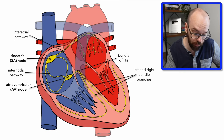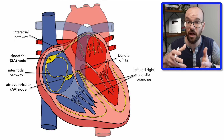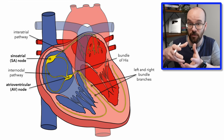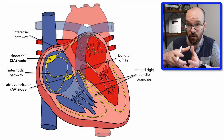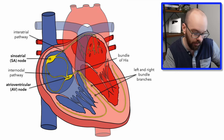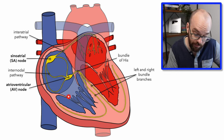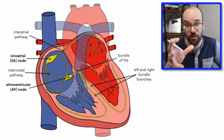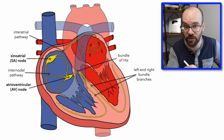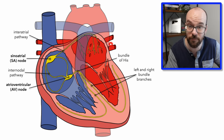The ventricles are stimulated to contract when the signal is passing back up, allowing pumping from the apex of the heart upward to force blood out through the pulmonary artery and the aorta. The tricuspid and mitral valves snap shut during this time to prevent blood from flowing back into the atria.